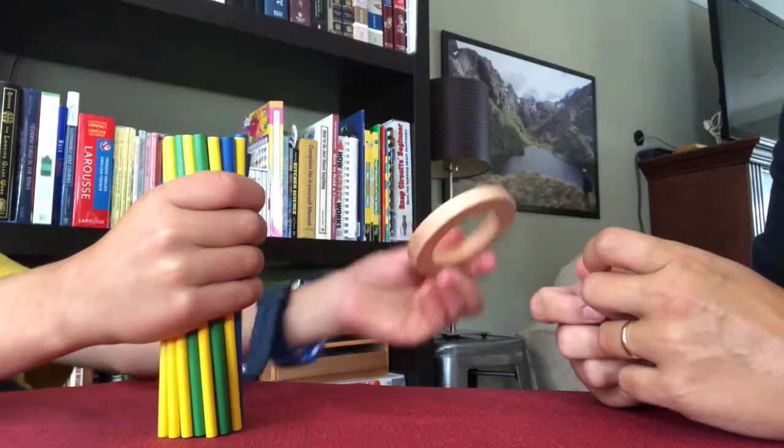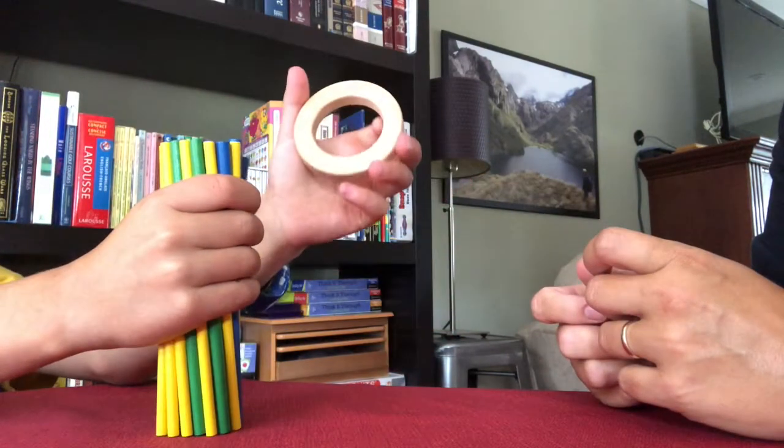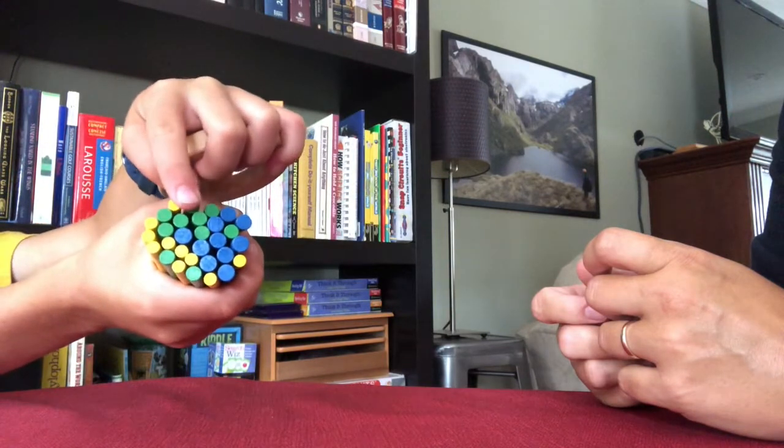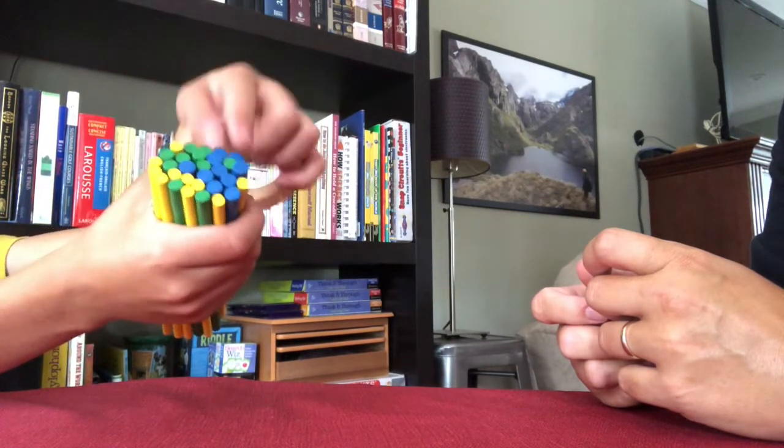So we have a loop, kind of, and then some sticks. The yellow ones are small, the green are kind of medium, and the blue are big.